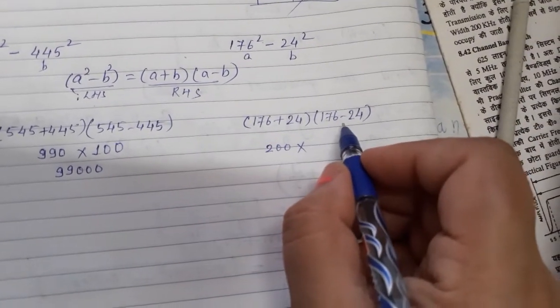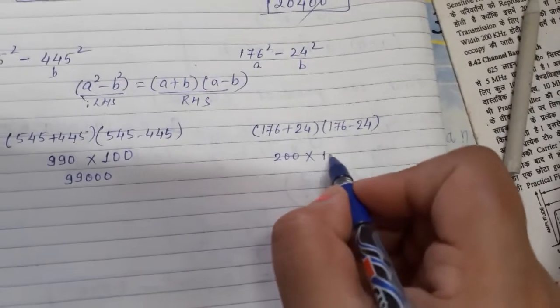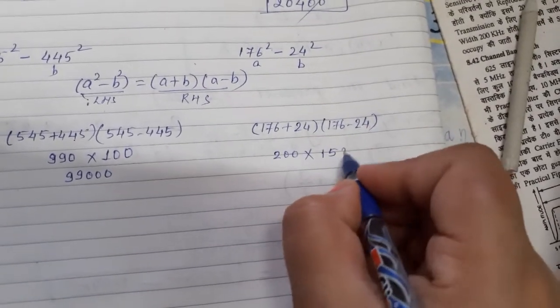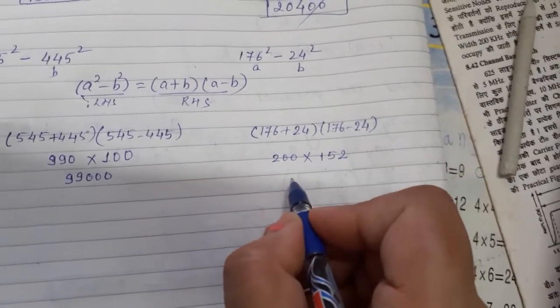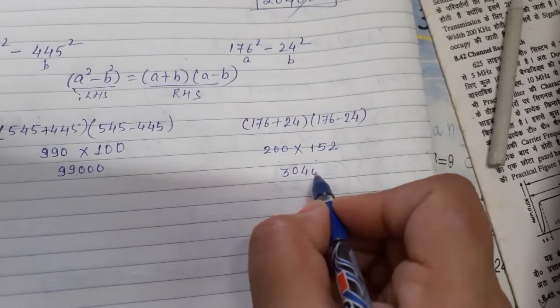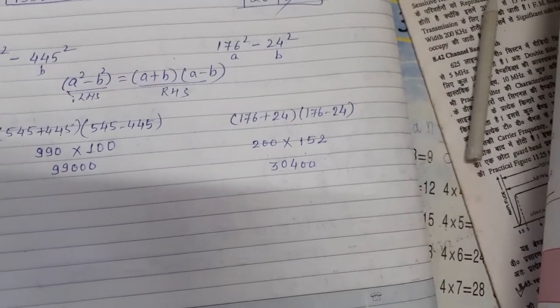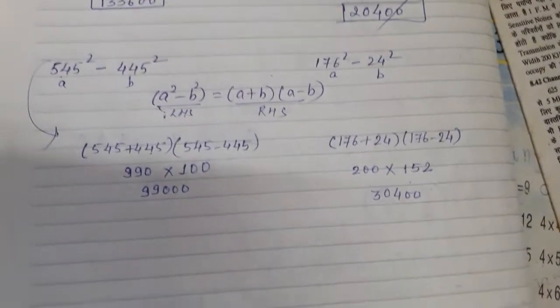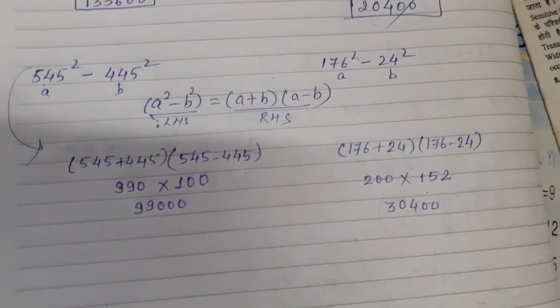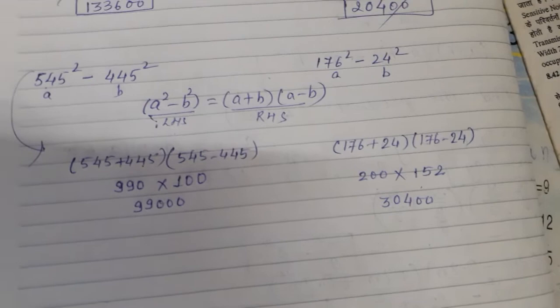176 minus 24 gives us 152. The product of these two is 30,400. In this way you can try the rest of the questions on the worksheet.